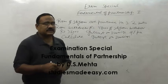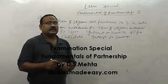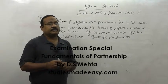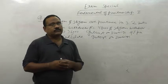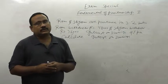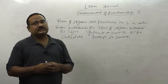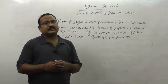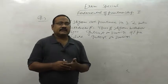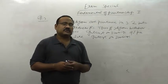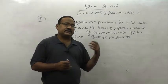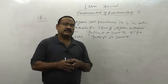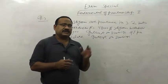Another question on drawing. Ram and Shyam are partners in the ratio of 3 to 2. Ram withdrew Rs. 48,000 and Shyam withdrew Rs. 36,000. The rate of interest on drawings is 9% per annum. Calculate the interest on drawings.